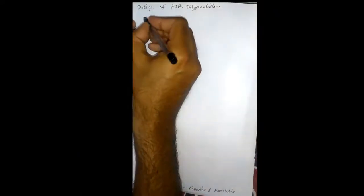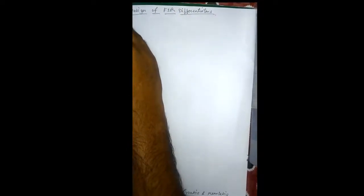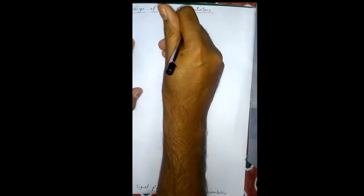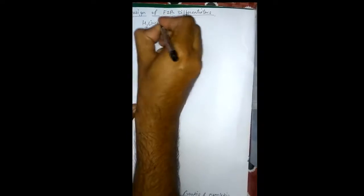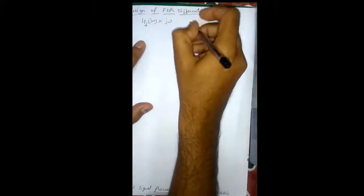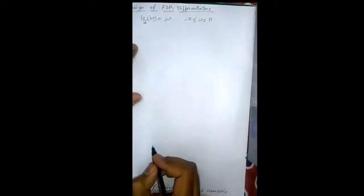Welcome to all. Today we are going to discuss the topic: design of FIR differentiators. Differentiators are used in many analog and digital systems to take the derivative of a signal. An ideal differentiator has a frequency response linearly proportional to frequency. Similarly, an ideal digital differentiator is defined as one that has a frequency response proportional to frequency, for a digital frequency range of minus pi to plus pi.